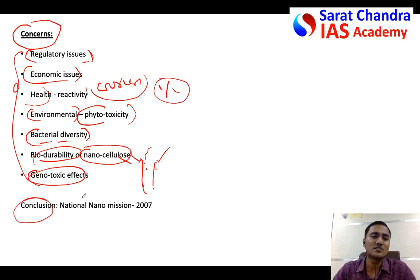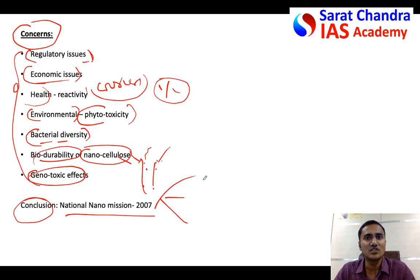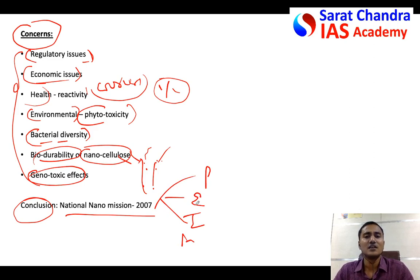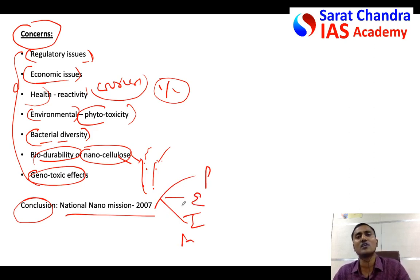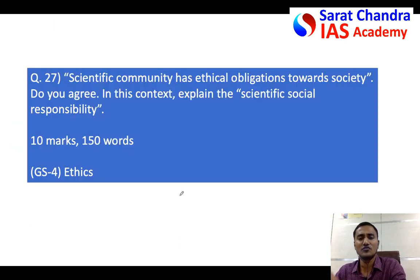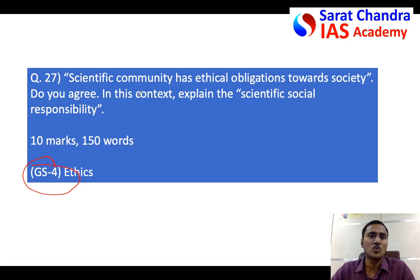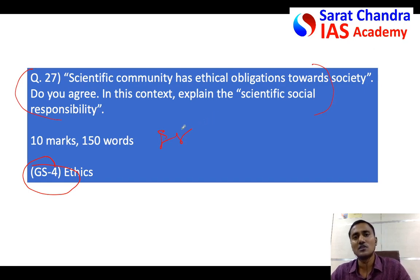In the conclusion, write something meaningful — for example, mention the National Nano Mission 2007, which looks into applications of nanotechnology in water purification, energy efficiency, industrialization, and agriculture. Hence, India should invest more in nanotechnology. The question for tomorrow is from General Studies Paper 4, Ethics — it is about the social responsibility of scientists. Write an answer in seven to eight minutes and we will discuss it tomorrow.